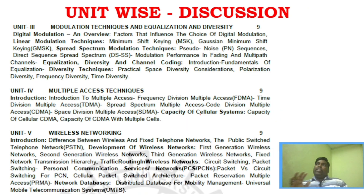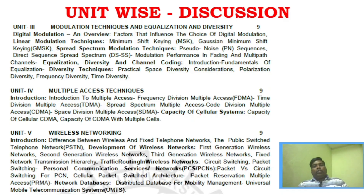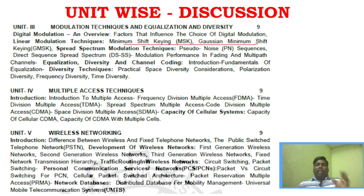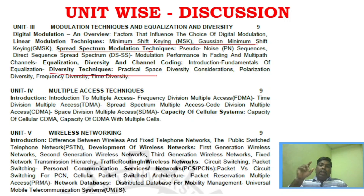Unit 3 is almost 80% theory and 20% problems. It is a very vast area. Key topics include MSK and GMSK — their generation, complete block diagrams, and comparison between MSK and GMSK, which is very very important. Also covered are spread spectrum techniques and diversity techniques, which is a very very important area.